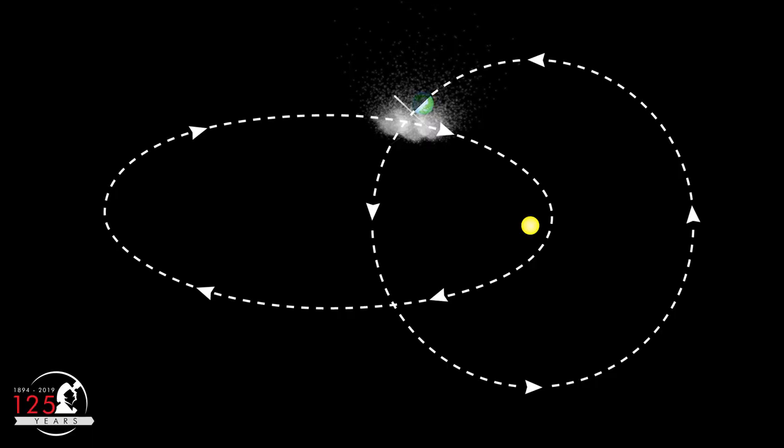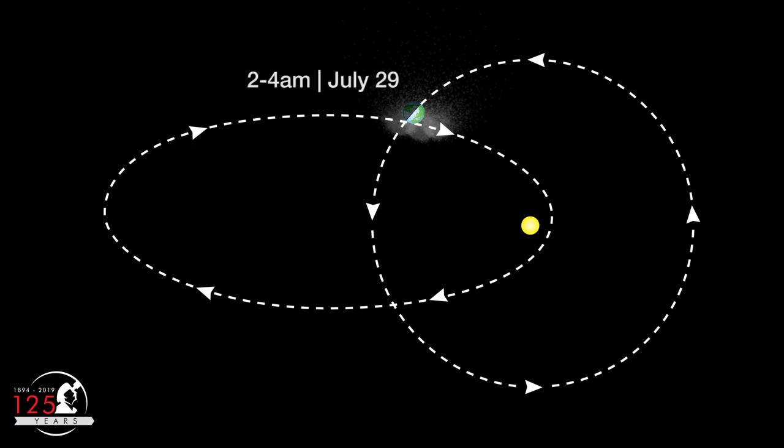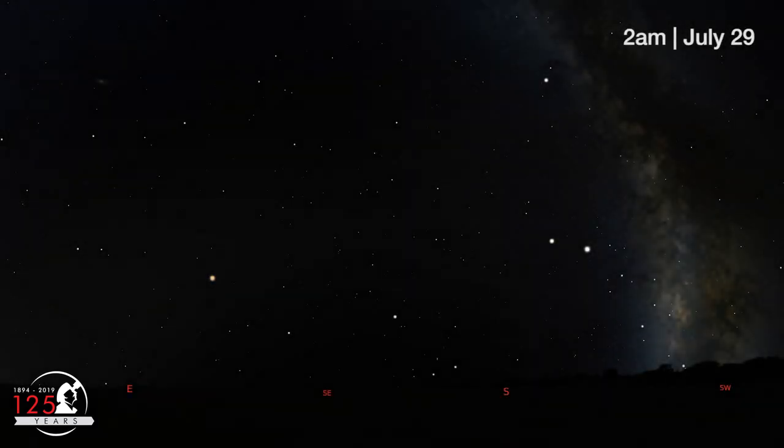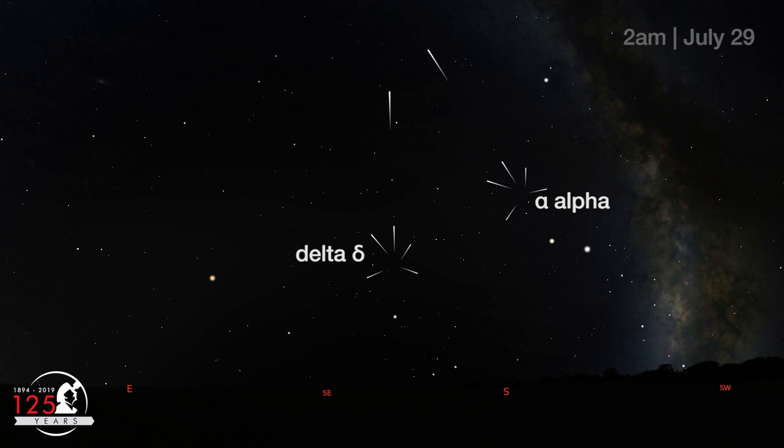You'll want to be on that windshield side of the Earth as it plows through the meteoroid stream, but you also want the Radiant to be as high as possible while the sky is still dark. This year, the best viewing window is between 2 a.m. and 4 a.m. local daylight savings time, on the morning of July 29th. Around 2 a.m., you'll find the radiance for both of these meteor showers low in the southern sky.